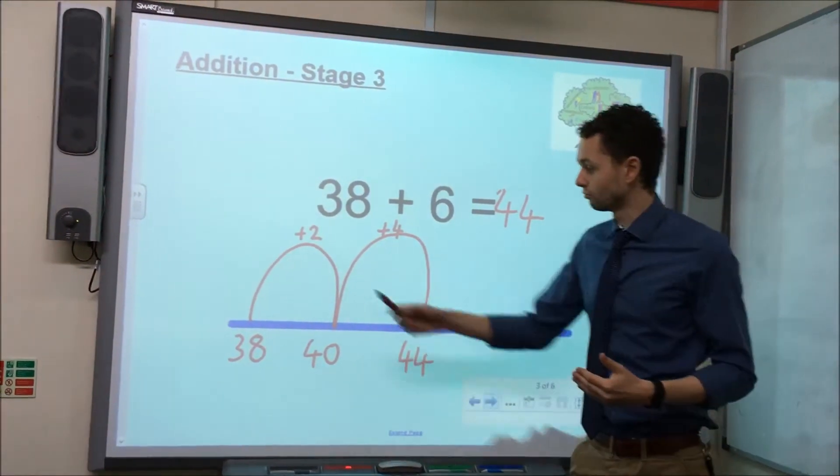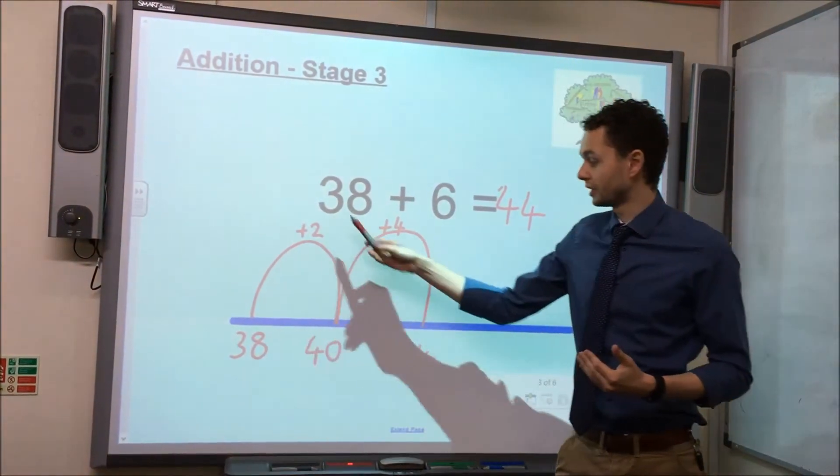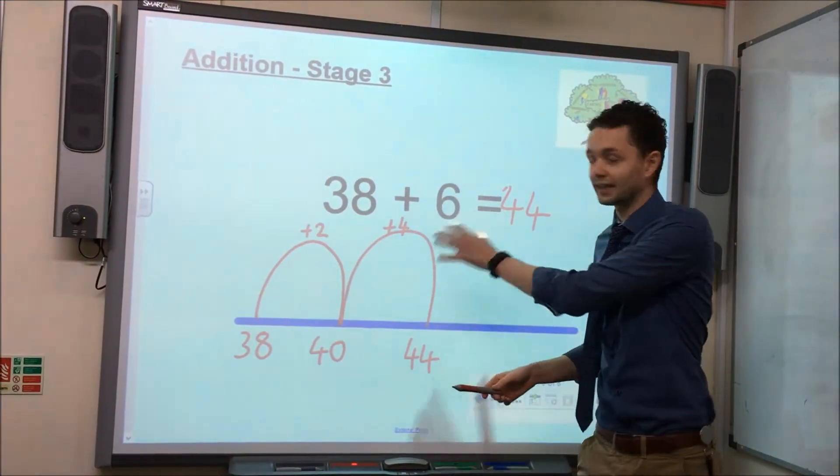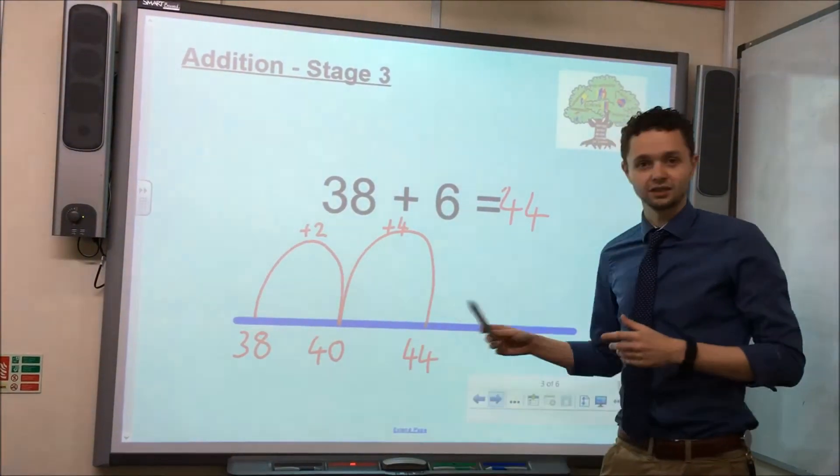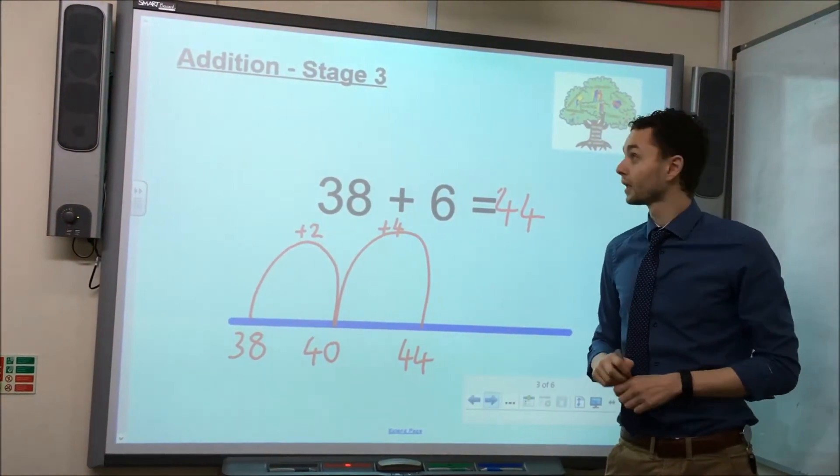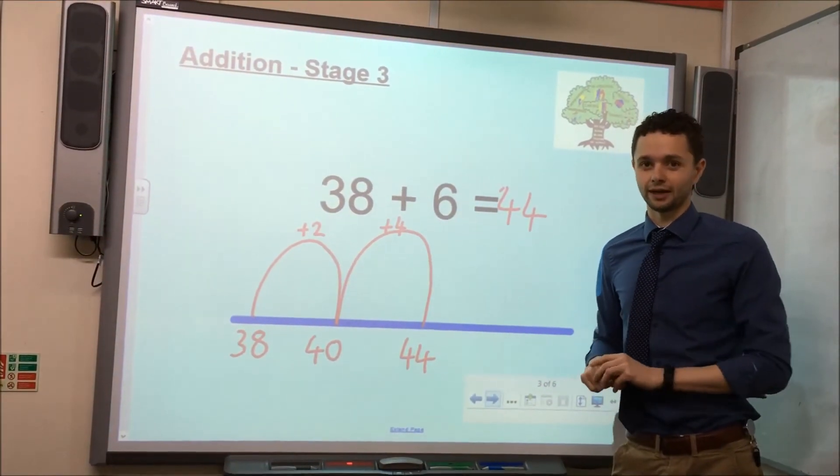So, as you can see, rather than jumping in steps of 1, we have jumped to the nearest 10, we have calculated the difference, and then we have made the next jump to find the answer. That is addition stage 3. I hope that was clear.